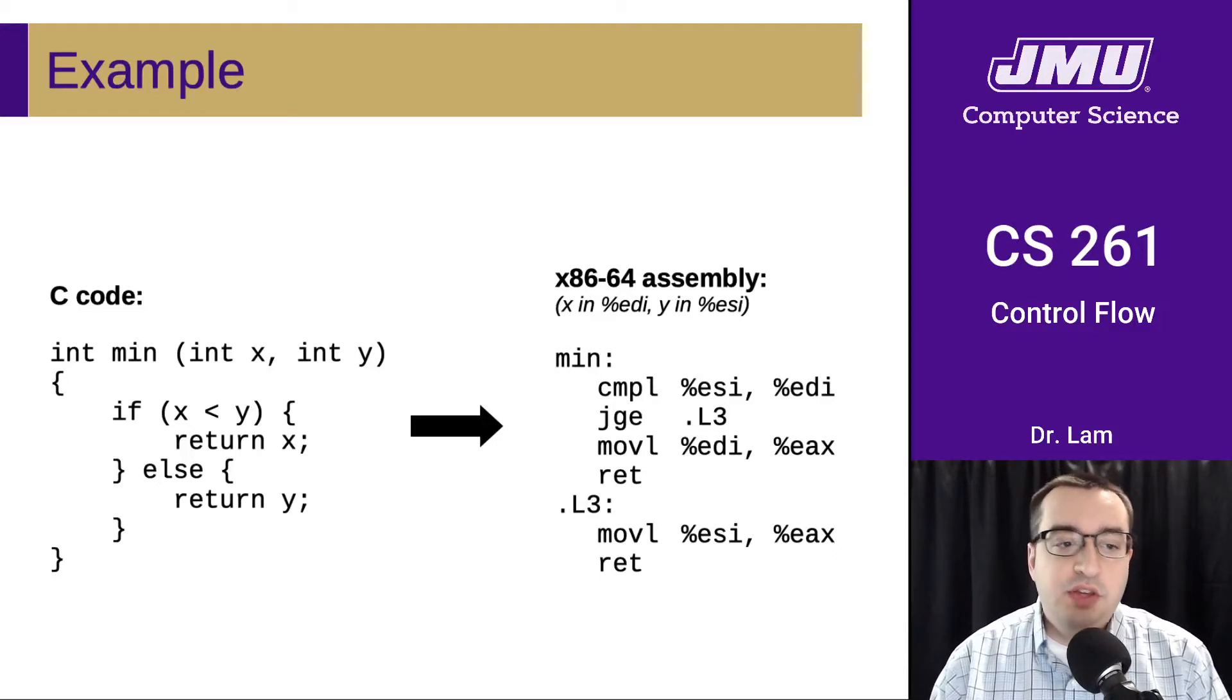Let's look at a short example. Here's the minimum function that we saw before. Let's assume that x is being stored in EDI and that y is being stored in ESI. We'll see next time that this is a reasonable assumption, but for now we'll just make that assumption.